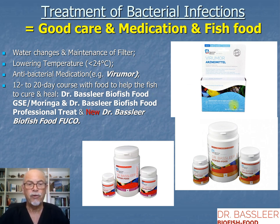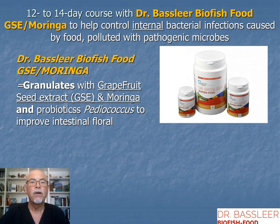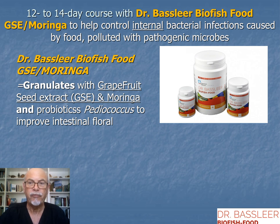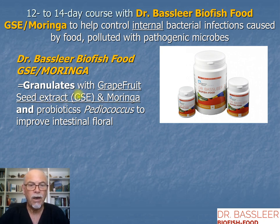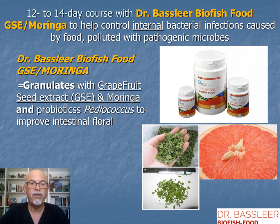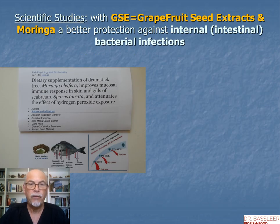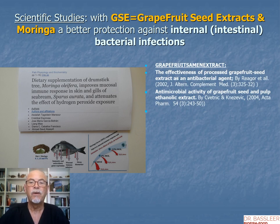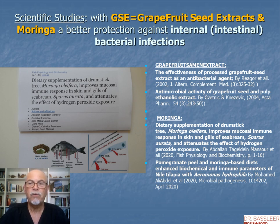A 12 to 40 day course with Dr. Baselier Biofish Food — Grape Food Seed Extract Moringa — helps to control internal bacterial infections usually caused by food polluted with pathogenic microbes. The grapefruit seed extract and moringa, together with the probiotic Pediococcus, help to improve the intestinal flora. These phytobiotics help the fish to repair. Scientific studies show that grapefruit seed extract and moringa provide better protection against internal intestinal bacterial infections, with antimicrobial activity and improved fish immunity.